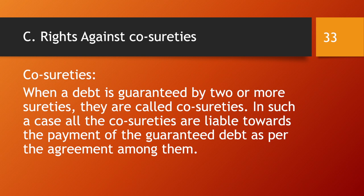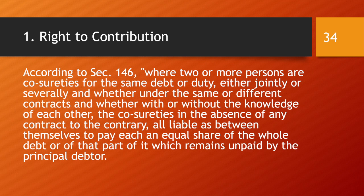Now, the rights against co-sureties. When a debt is guaranteed by two or more sureties, they are called co-sureties, and all are liable towards payment of the guaranteed debt as per the agreement among them. According to Section 146, where two or more persons are co-sureties for the same debt or duty, whether jointly or severally, under the same or different contracts, and whether with or without knowledge of each other, the co-sureties are liable as between themselves to pay each an equal share of the whole debt or the part remaining unpaid.